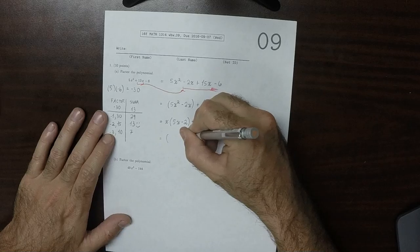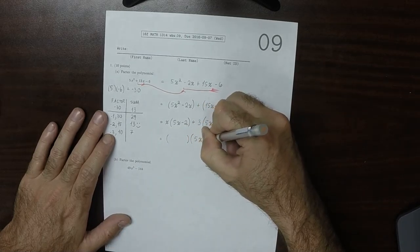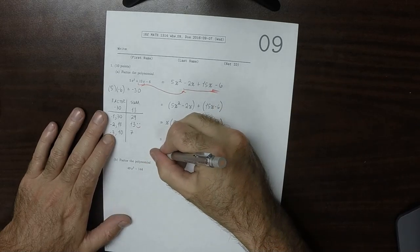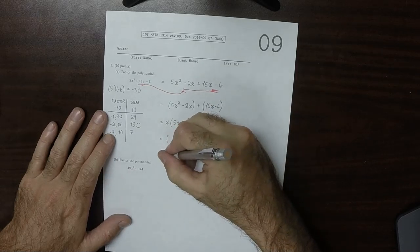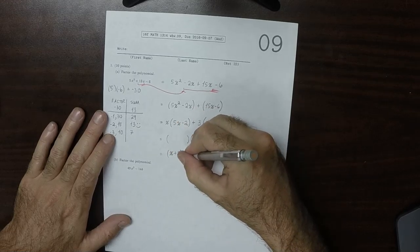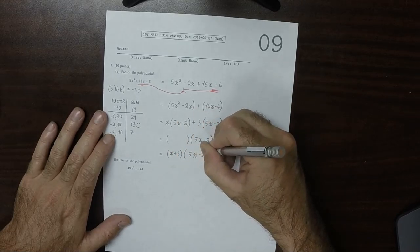So that means that we can factor out 5x minus 2, and we should be able to fill in this. And the terms that go in here are x and 3. So x plus 3 and 5x minus 2.